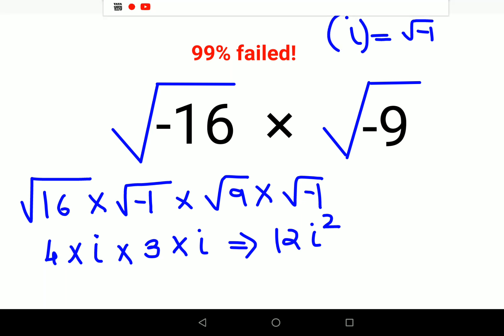Now if i is √(-1), therefore i² will be just squaring this, so you will get this as nothing but -1. So your final answer will be 12 × (-1), which comes out to be -12.